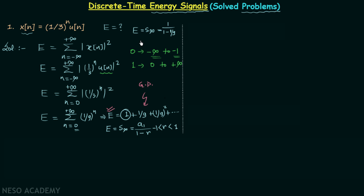When you simplify this, you get the total energy equal to 9 divided by 8 joules. So this is the answer: the total energy of Xn equals 9/8 joules.